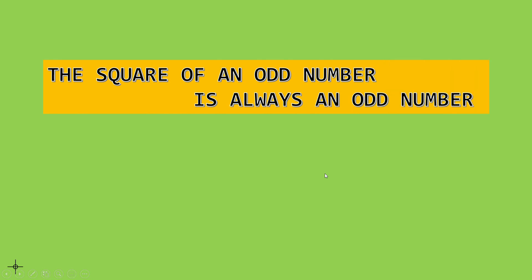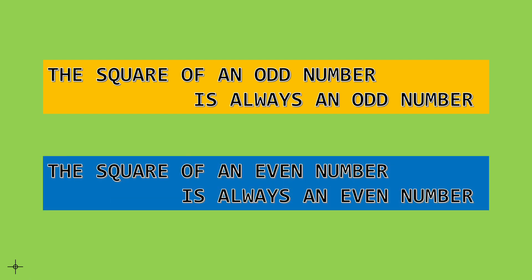Another fact about square numbers: the square of any odd number is always an odd number, and the square of any even number is always an even number.